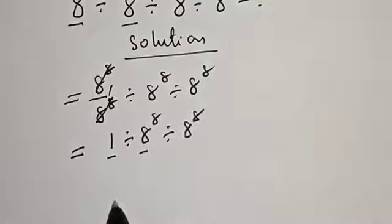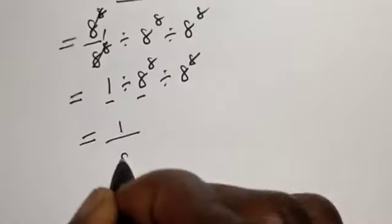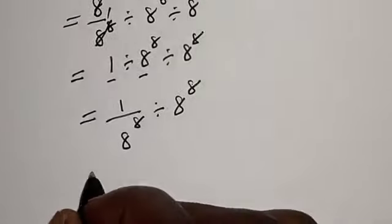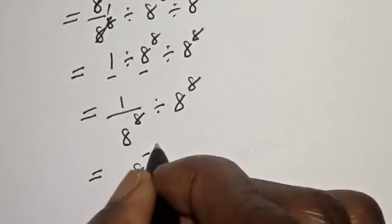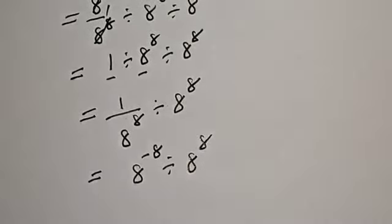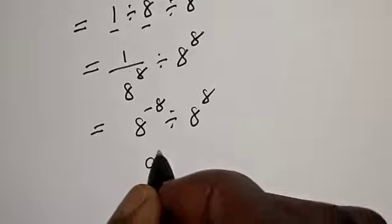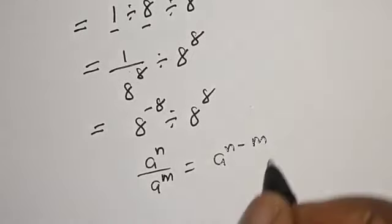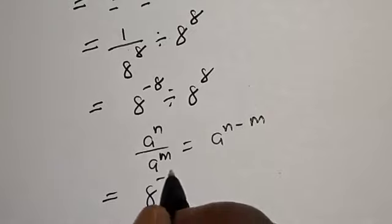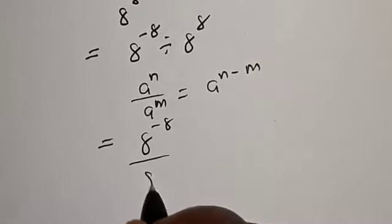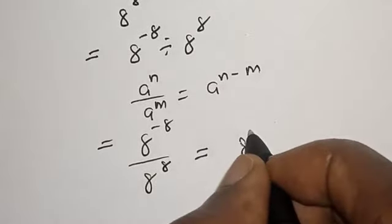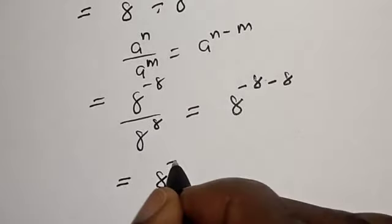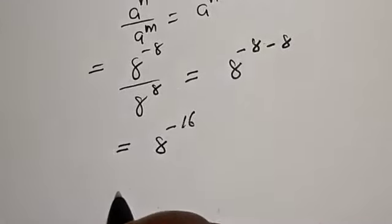Then let's work on this operation also. We have 1 over 8 raised to power 8 divided by 8 raised to power 8, which equals a raised to power minus n divided by a raised to power n. If you have a raised to power n over a raised to power m, this equals a raised to power n minus m. So this becomes a raised to power minus n over a raised to power n, which equals a raised to power minus n minus n, giving us a raised to power minus 16.